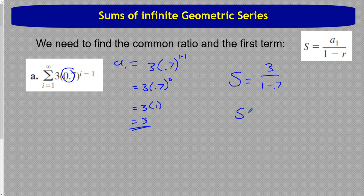So the sum is equal to three over one minus... What did we say our r value was? It is this guy, the 0.7. So our sum is three over 0.3. You can do that on a calculator if you want, but three divided by 0.3 is ten.